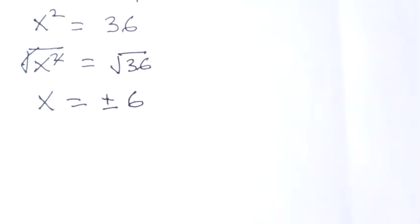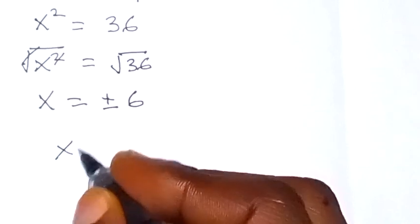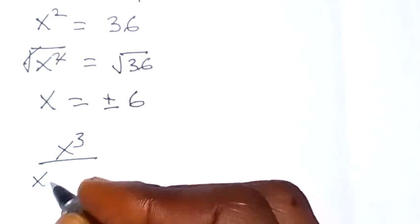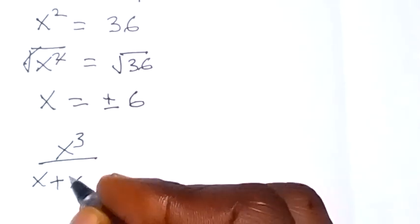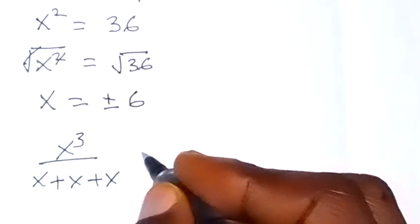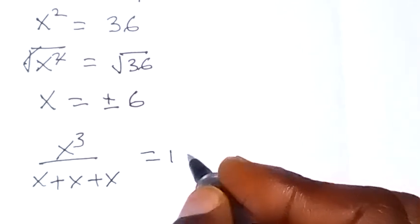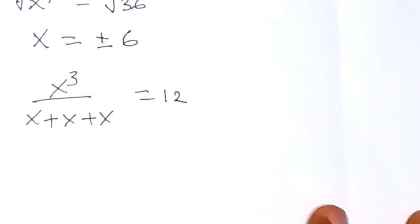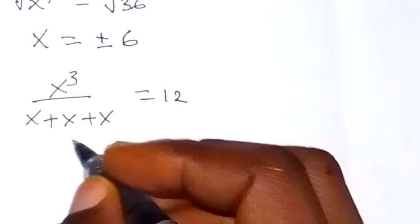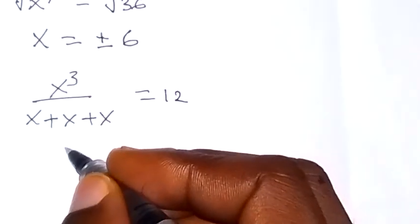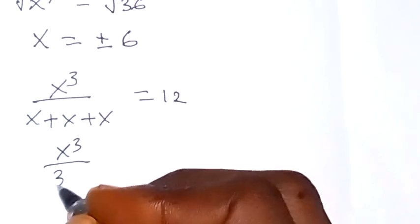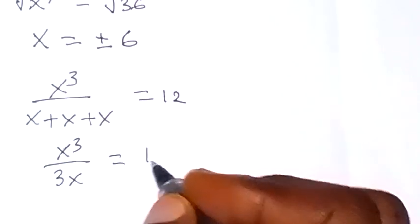We can also see it another way. We have x raised to power 3 over x plus x plus x equals to 12. When we add it together, we have 3x, so this becomes x raised to power 3 over 3x equals to 12.